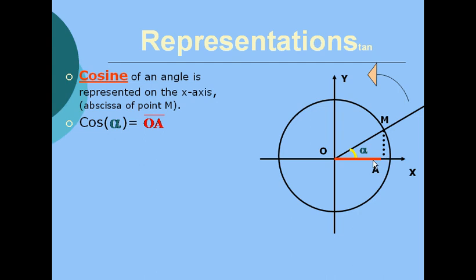In triangle OMA, angle OAM is 90°, therefore this triangle is a right triangle. So we can use the formula: cosine of angle alpha equals adjacent side over hypotenuse. Here the hypotenuse is equal to the radius of the trigonometric circle, which is 1, therefore cosine alpha is equal to OA over 1.